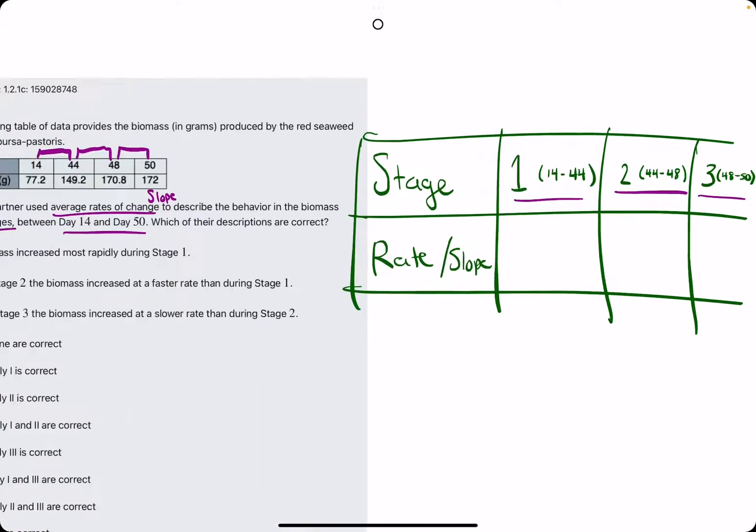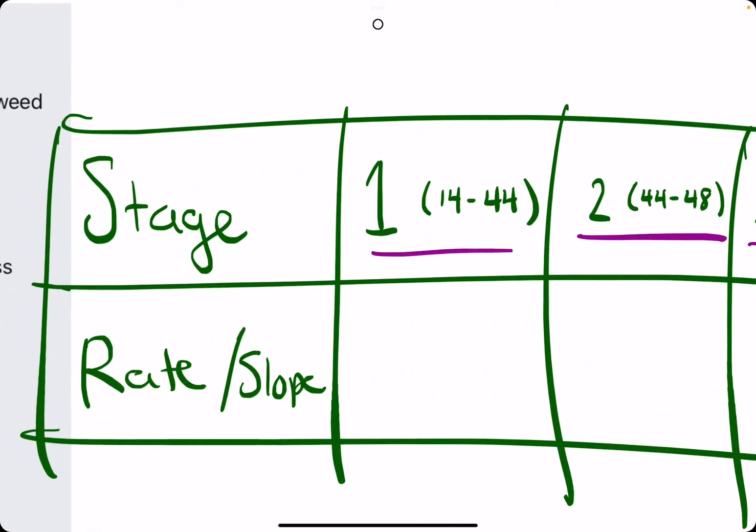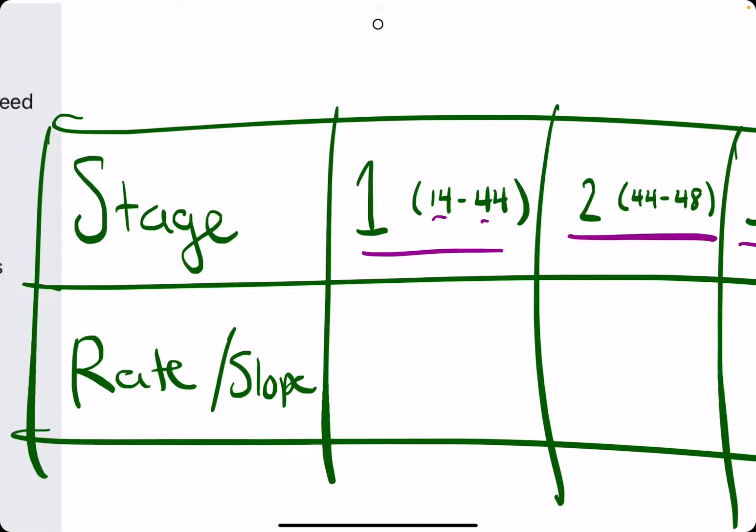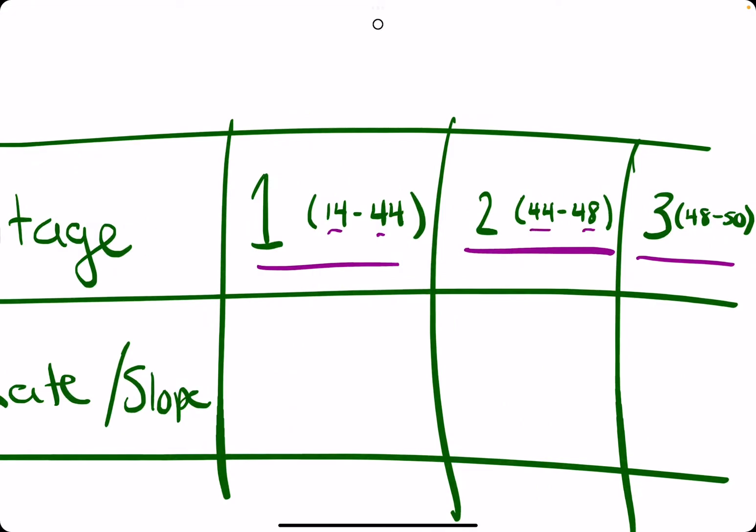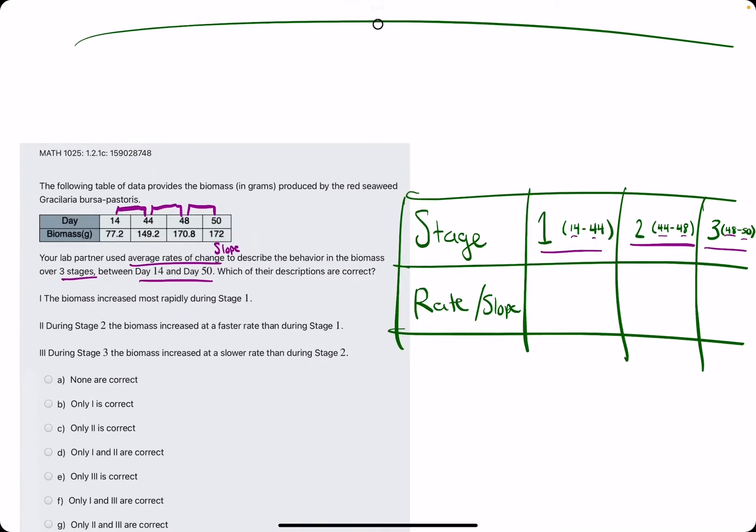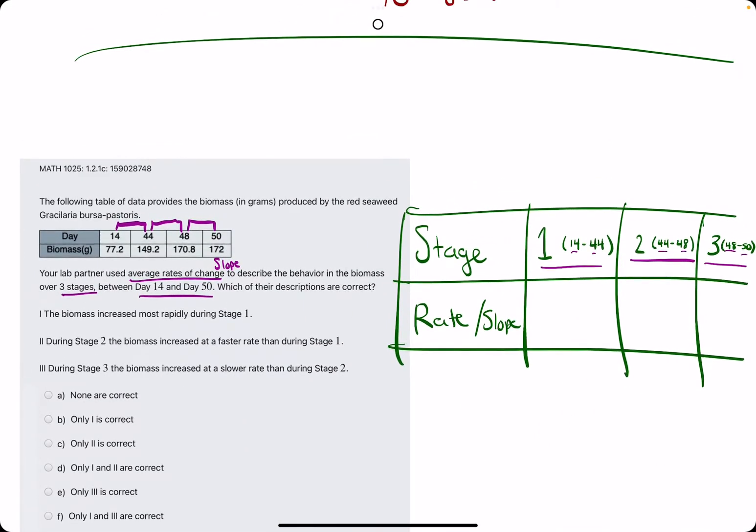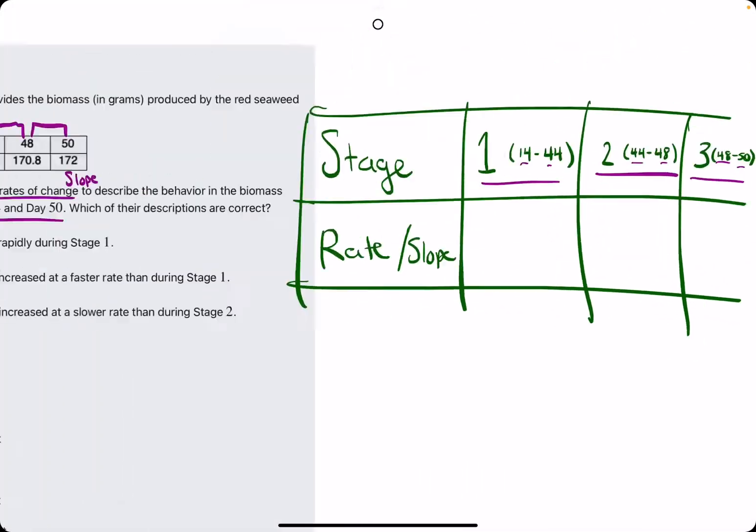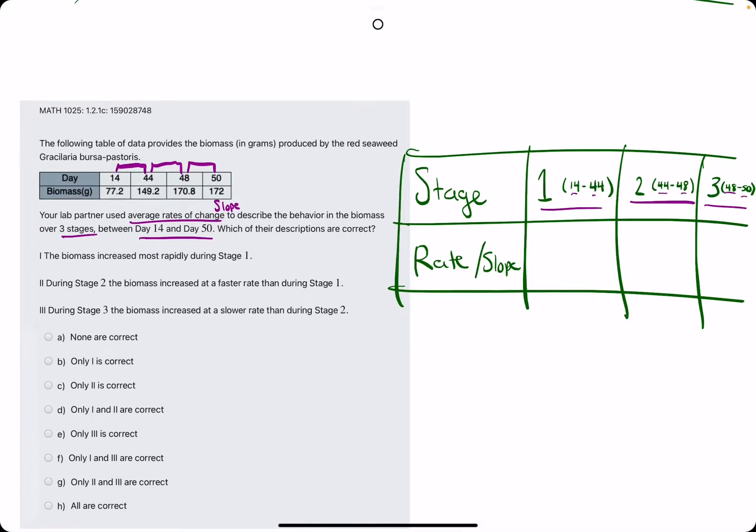So the goal really is just to find the slope between the two stage 1 points, stage 2 points, and stage 3 points. Let's find the slope for each of those, and then just use those to answer the statements here. Figure out which statements are true or false.